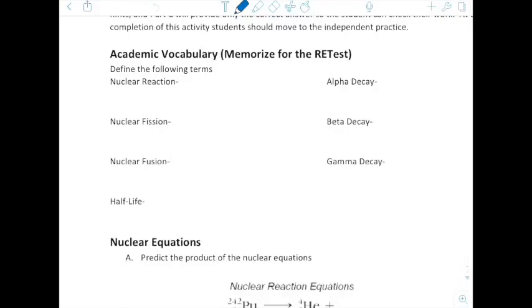A nuclear reaction is a reaction that involves the nuclei changing by splitting apart or combining protons and neutrons. Nuclear fission is large nuclei that split into two smaller nuclei. Nuclear fusion: the two smaller nuclei that stick together to make one large nuclei. Half-life: the time it takes for half of a radioactive sample to decay.